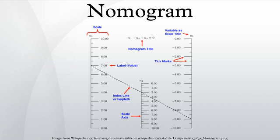Like a slide rule, a nomogram is a graphical analog computation device, and like the slide rule, its accuracy is limited by the precision with which physical markings can be drawn, reproduced, viewed, and aligned. Most nomograms are used in applications where an approximate answer is appropriate and useful. Alternatively, a nomogram may be used to check an answer obtained from another exact calculation method. The slide rule is intended to be a general purpose device, while a nomogram is designed to perform a specific calculation, with tables of values effectively built into the construction of the scales.